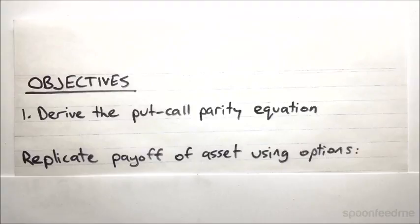So if you can do that, then according to the no-arbitrage pricing principle, if we can get the exact same payoff from both a share or asset and from options on that asset, then the prices of both must be the same.